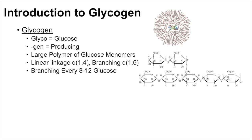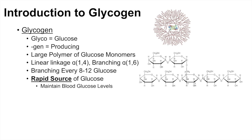Because of the meaning 'glucose-producing,' glycogen is in fact a rapid source of glucose — that's the key about glycogen. It is highly important because it actually maintains blood glucose levels. During prolonged fasting, glycogen stores in our body typically only last about 24 hours or a little less than 24 hours.